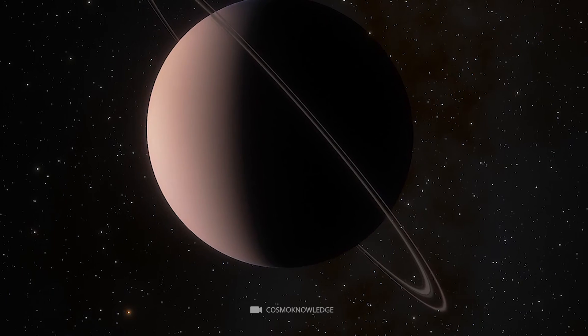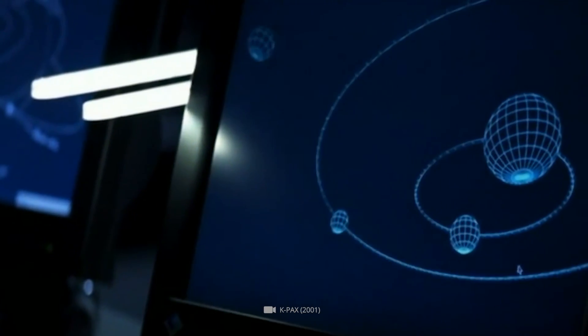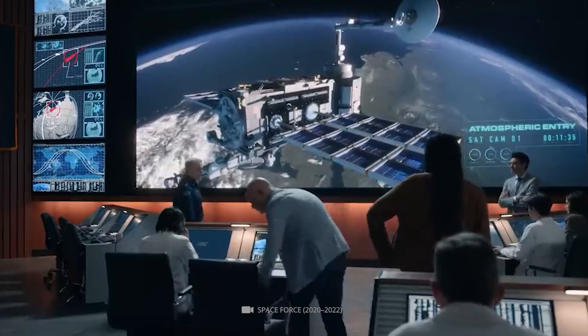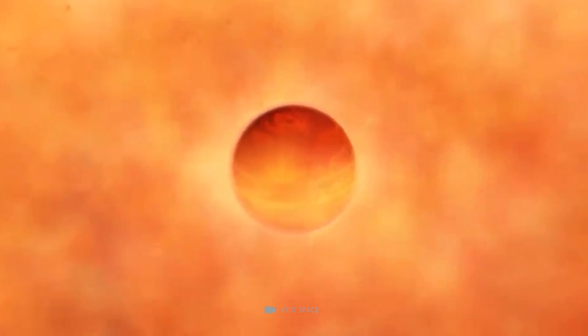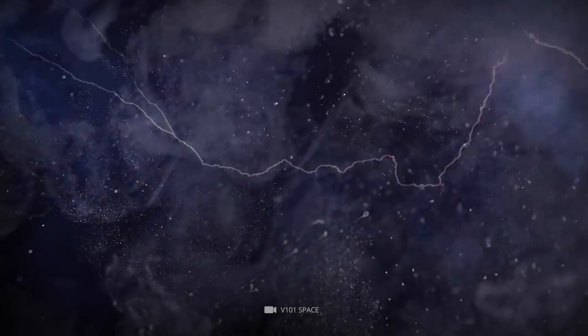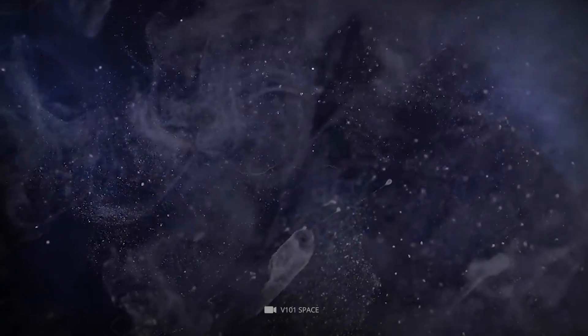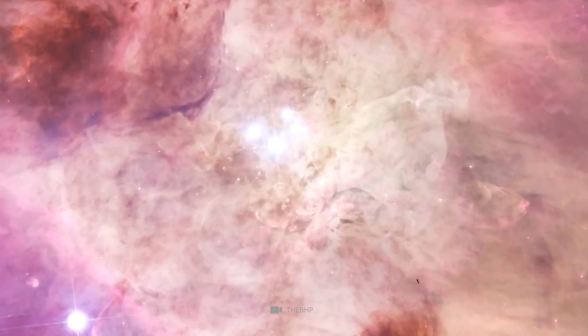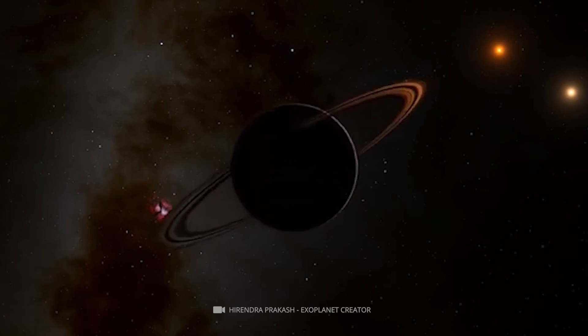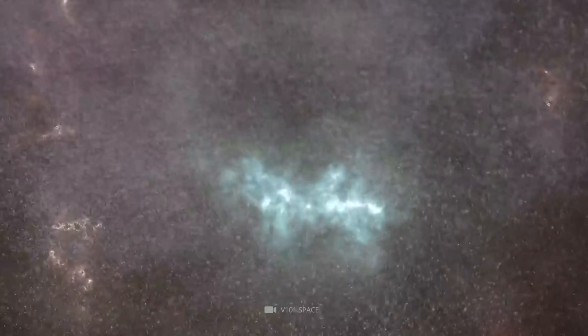The atmosphere of ROX 42BB is also of great interest to astronomers. Observations have suggested that the exoplanet may have a relatively young and hot atmosphere, with temperatures estimated to be between 1,000 and 1,500 Kelvin. These high temperatures are thought to be caused by the proximity of ROX 42BB to its star.